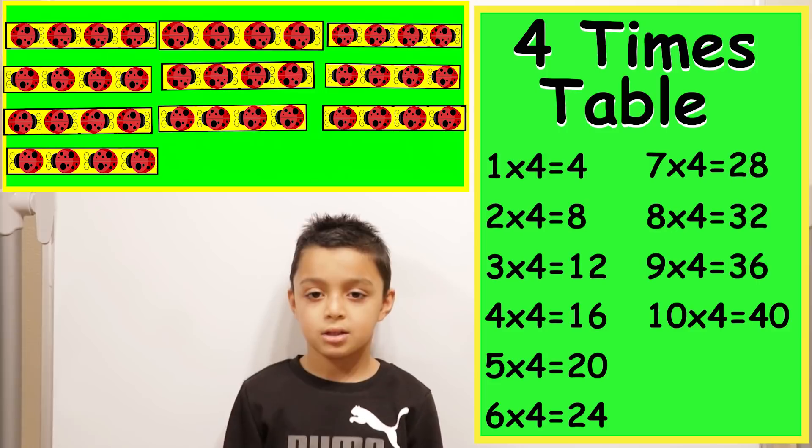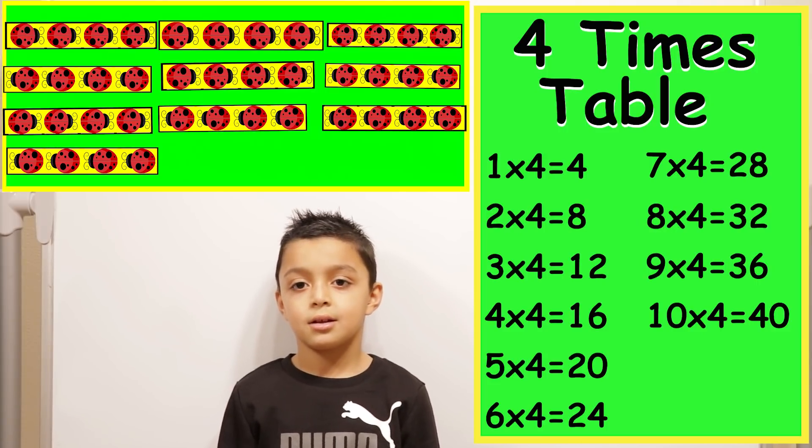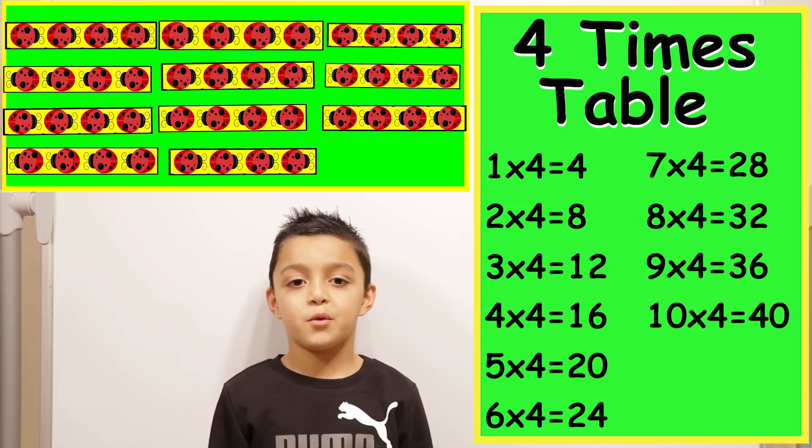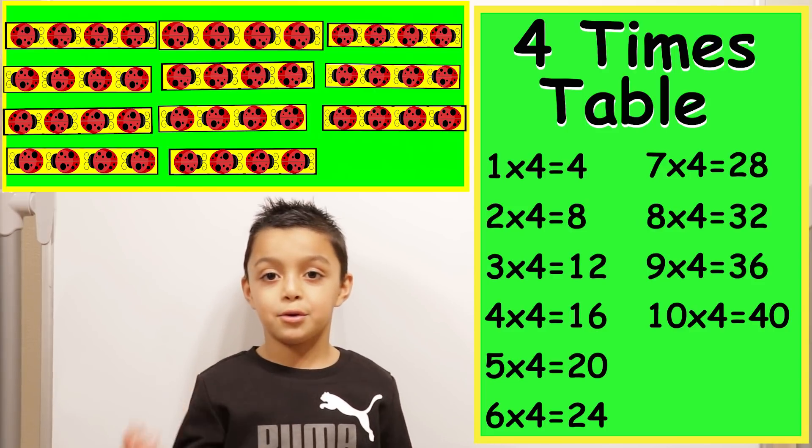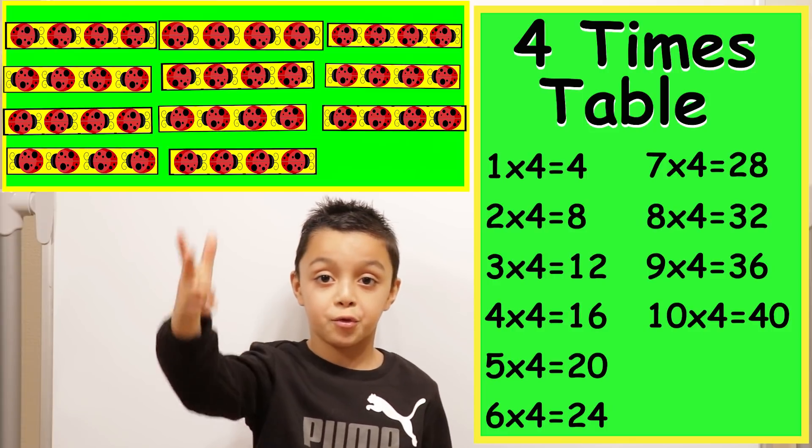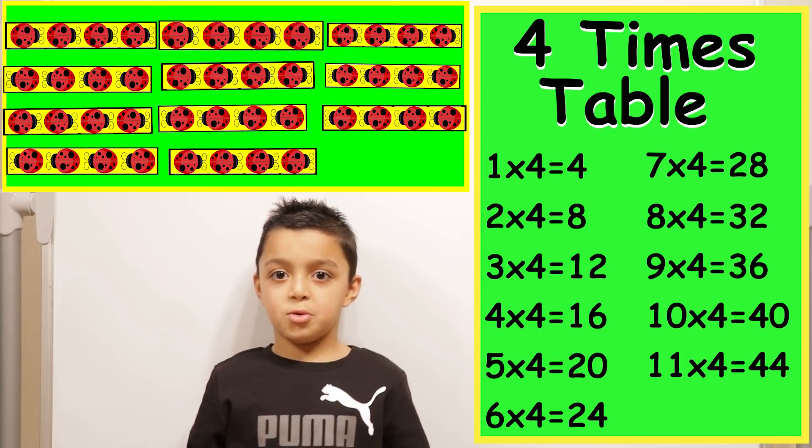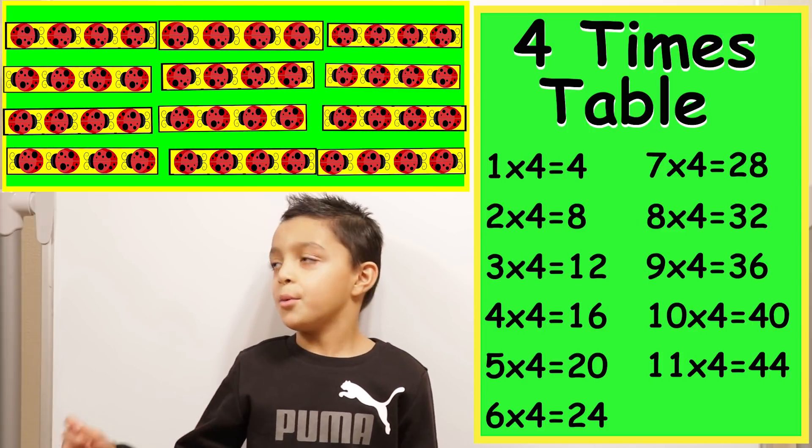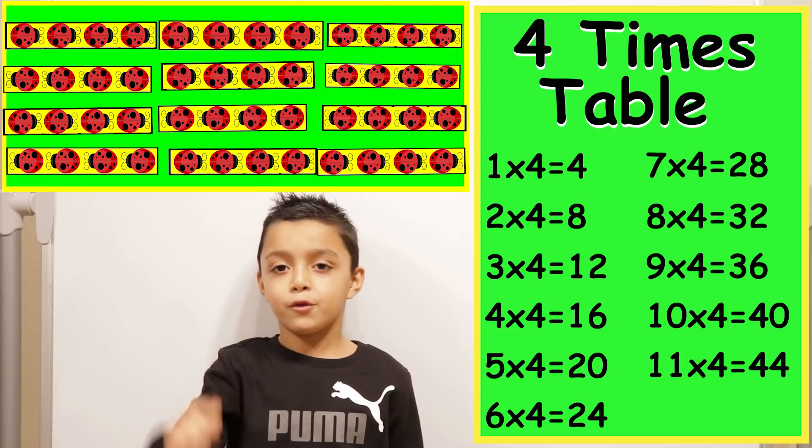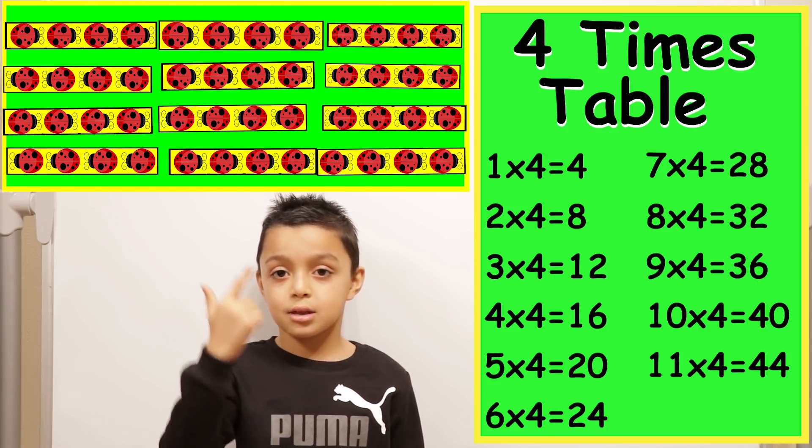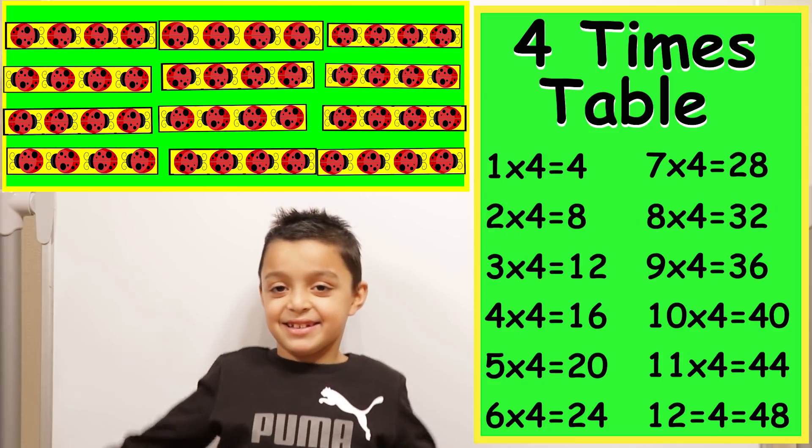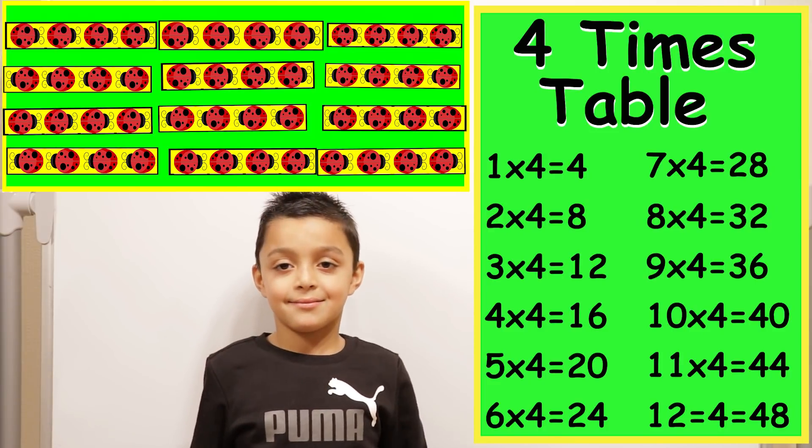So if ten times four equals forty, how would you work out eleven times four? You just add on four to forty. So forty-four, forty-one, forty-two, forty-three, forty-four. Great. And the last one. Twelve times four. So we're on forty-four, forty-five, forty-six, forty-seven, forty-eight. Very good, Niall. You've done your entire four times tables.